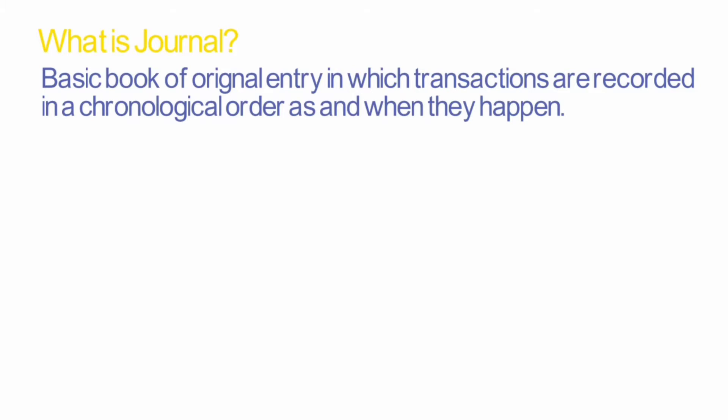Original entry means that the transaction is recorded for the first time, and chronological order means that it is recorded date-wise in the journal. So, a basic book of original entry in which transactions are recorded in chronological order as and when they occur is known as journal.